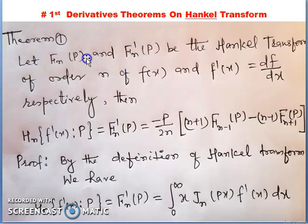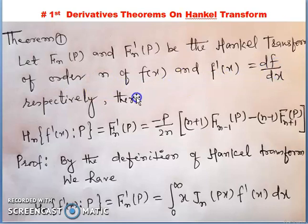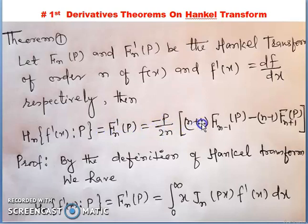Let fn(p) and fn'(p) be the Hankel transform of order n of f(x) and f'(x) = df/dx respectively. Then the Hankel transform of f'(x) such that p equals fn'(p) = -p/(2n) * [(n+1)*f_{n-1}(p) - (n-1)*f_{n+1}(p)]. So this is the first derivative of the Hankel transform.